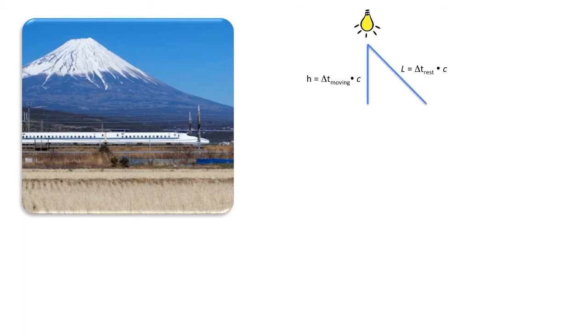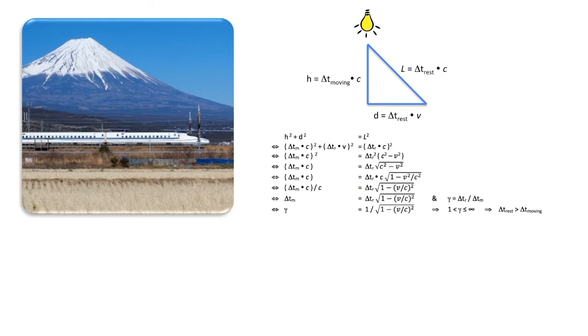There is a light ray going from the ceiling to the floor over a distance h. But for somebody standing still outside the train, the light ray would have traveled over a distance l, while the train advanced over distance d. So we can use the formula h² + d² = l². Considering that gamma is the time that passed for the observer standing outside the train at zero velocity over the time that passed for somebody inside the moving train, then you get gamma = 1 over the square root of 1 minus v over c, squared.